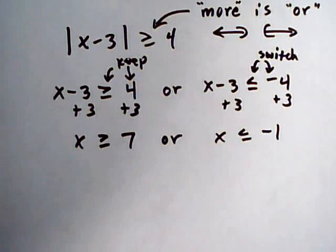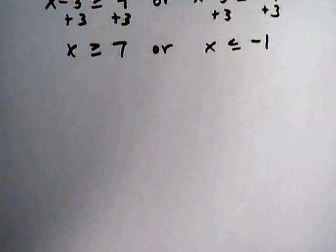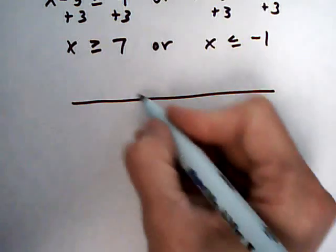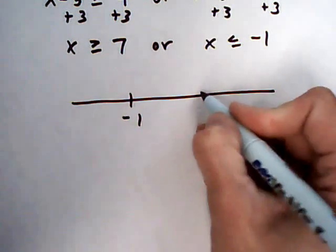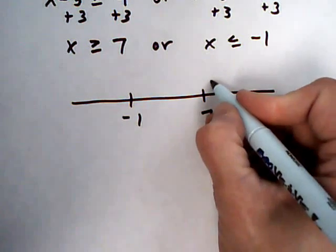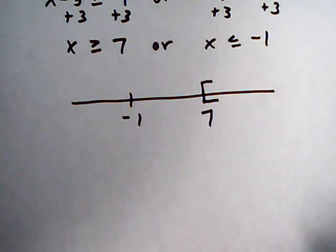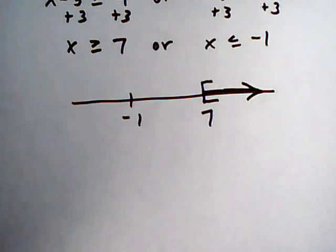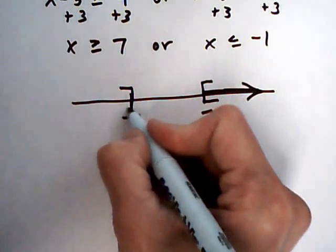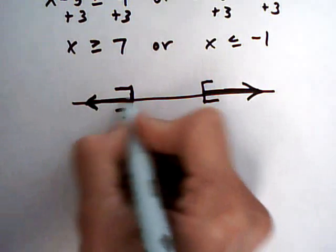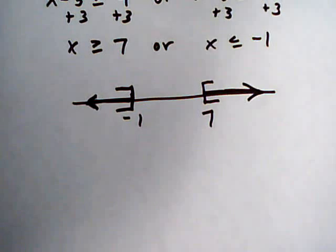So let's see what that looks like on a graph. So if we graph this out, we have the important points are minus 1 and 7. And we're greater than or equal to 7. And because it can be equal to 7, we're going to put the bracket there. Greater than means going to the right. And then for the x is less than or equal to minus 1, again, a bracket because it can be equal to minus 1. And then we're going to the left. So that would be the graph.